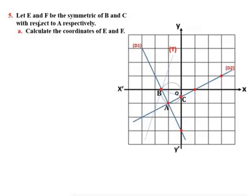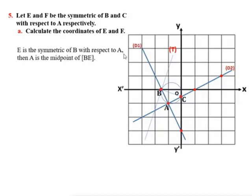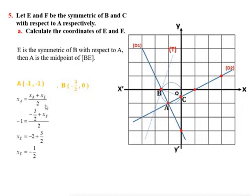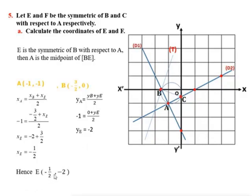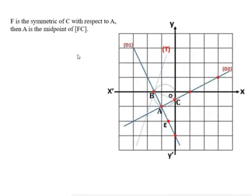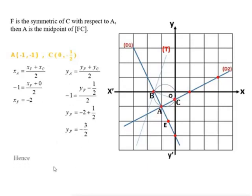Number 5: let E and F be the symmetric of B and C with respect to A respectively. Calculate the coordinates of E and F. Since E is the symmetric of B with respect to A, A is the midpoint of BE. Using the midpoint formula, x_A equals (x_B plus x_E) over 2. By calculation, we get x_E equal minus 1.5 and y_E equal minus 2. Hence E equals (−1.5, −2). We represent it graphically. Now for F, applying the midpoint rule, x_F equal minus 2 and y_F equal minus 3 over 2. Hence F equals (−2, −3/2). We represent it graphically.